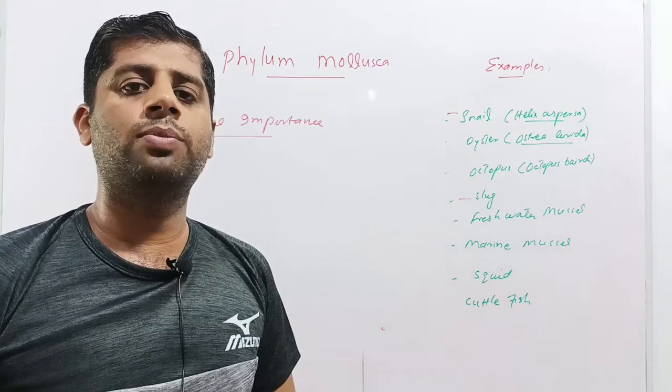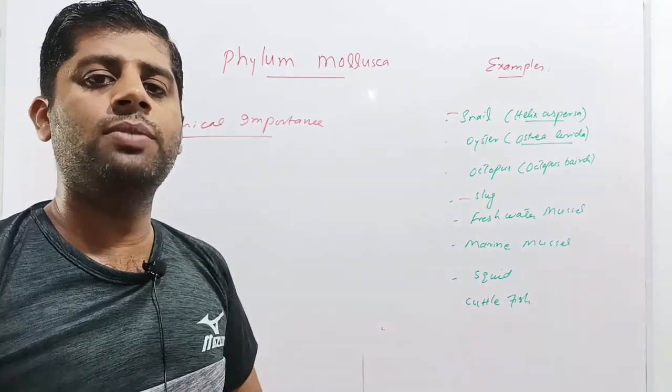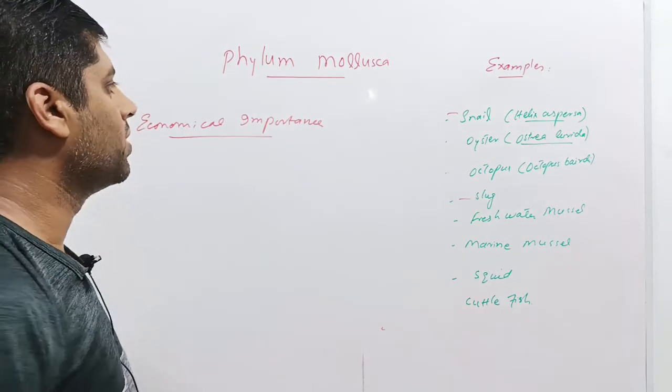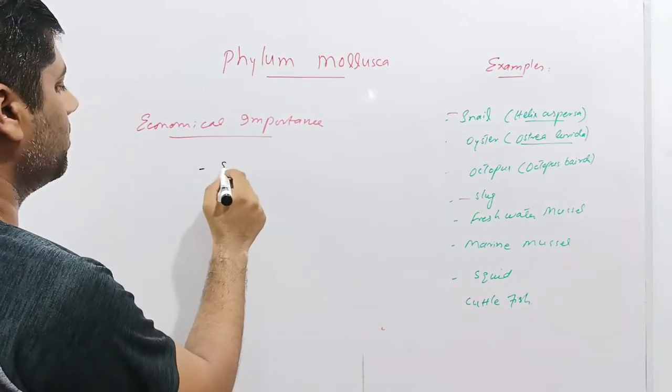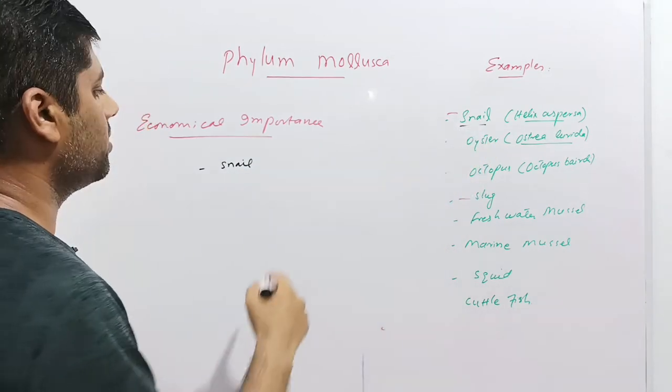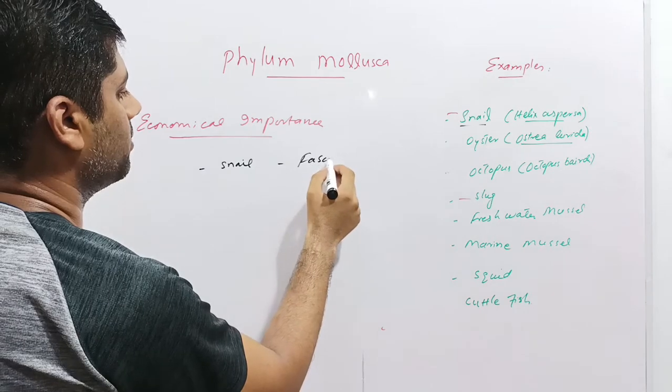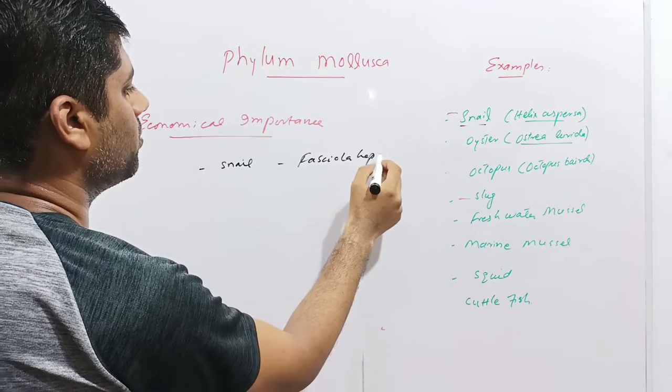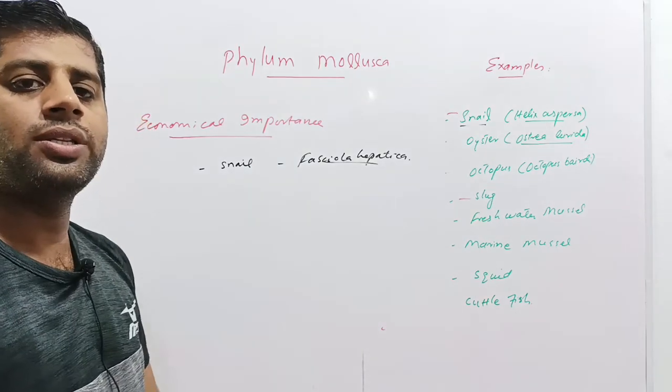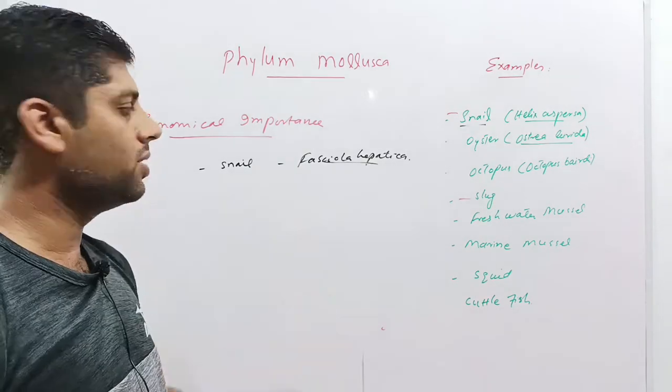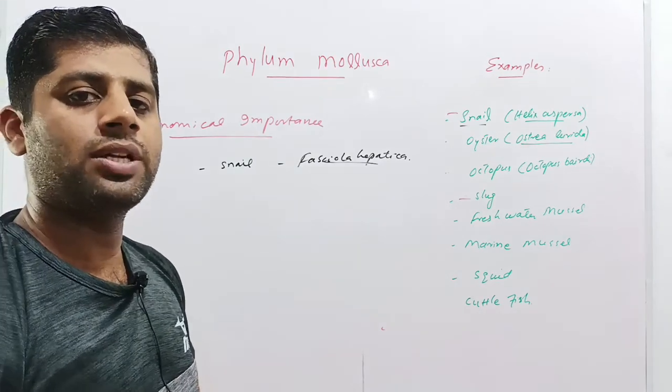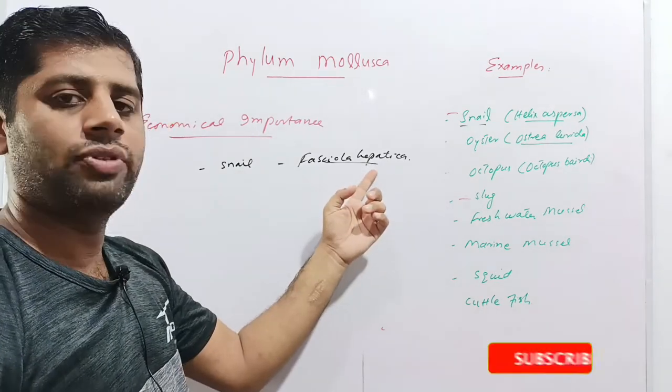We will discuss the economical importance of the phylum mollusca. These are significantly important. Each member of the phylum mollusca has its own importance pertaining to the economical side. For example, the snail, the most common garden insect, contains Fasciola hepatica in it. As we have seen that Fasciola hepatica was the liver fluke. The cows, sheep, goat etc. feed on the grasses in the fields. These also ingest the snail containing the Fasciola hepatica, and in turn these animals are infested with this parasite, causing liver cirrhosis and liver damage to these animals.